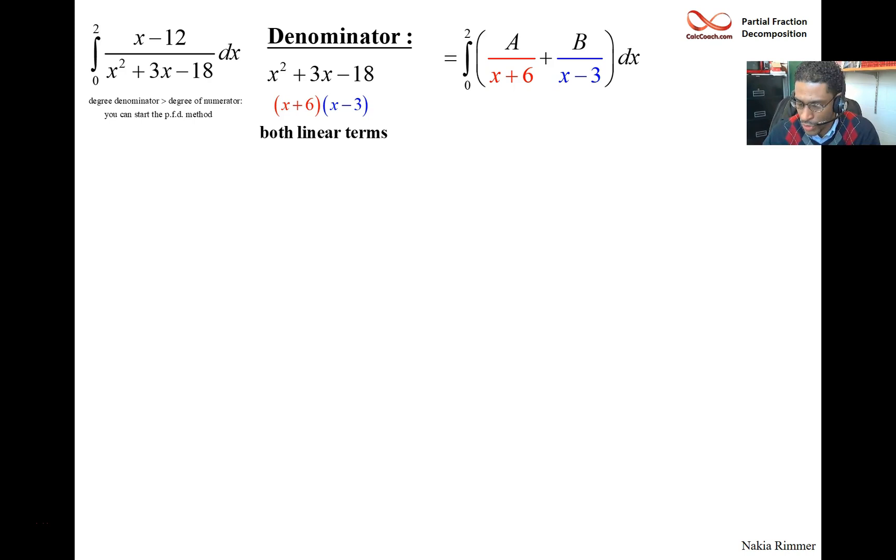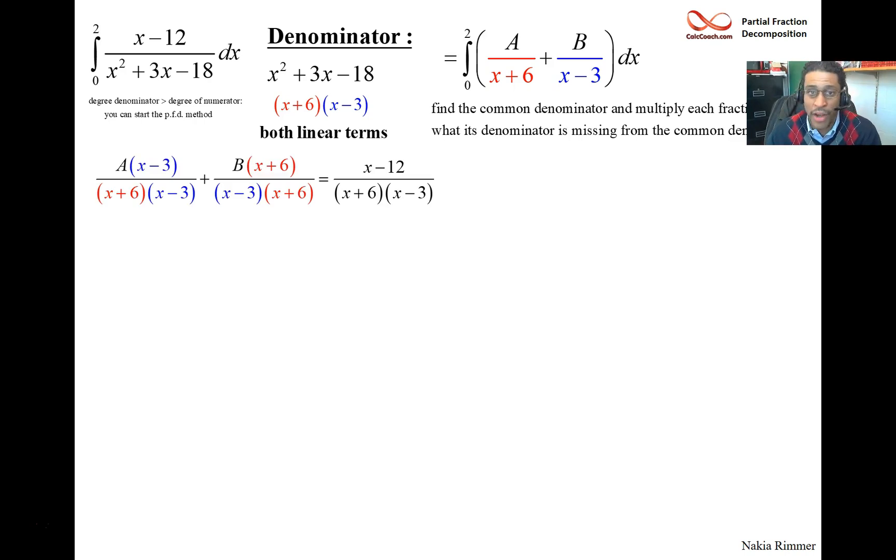Well, in order to do that, what you do is imagine yourself then putting them back together. You've got to find the common denominator, and your job is to multiply by what you're missing from that common denominator. So the A fraction is missing the x minus 3, and the B fraction is missing the x plus 6.